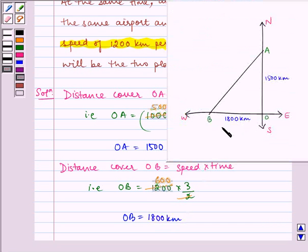Here, we can see OB is equal to 1800 km. Now, according to the problem AB is the required distance.